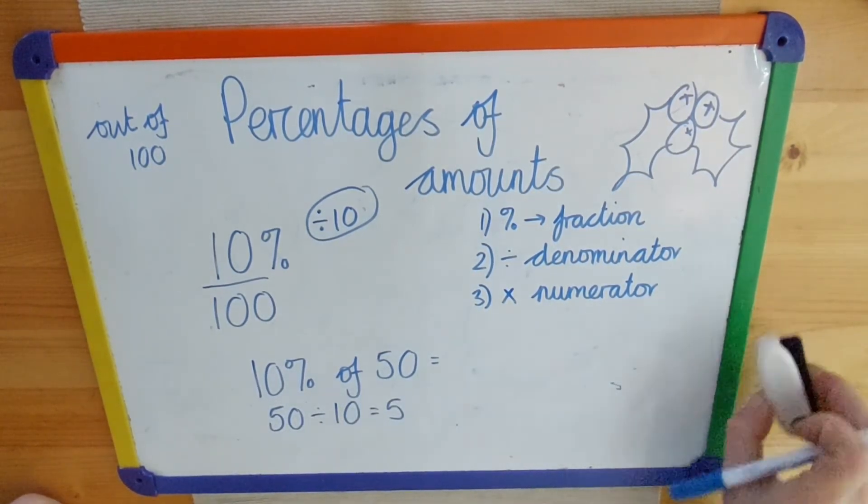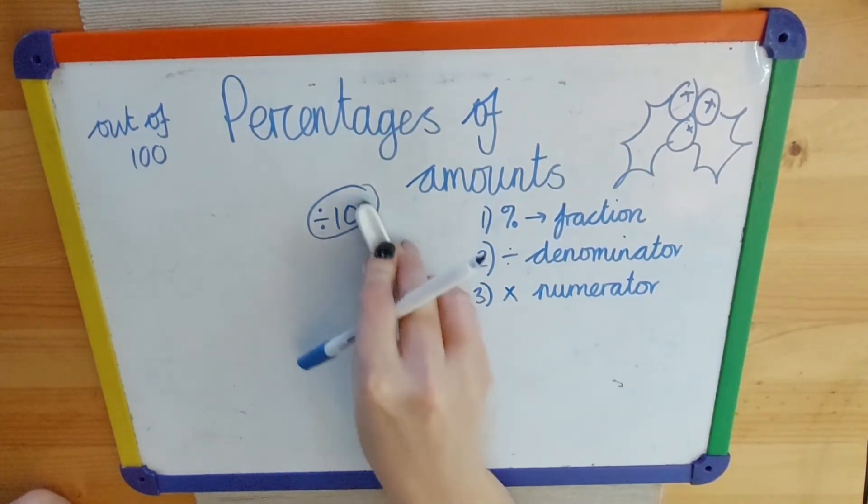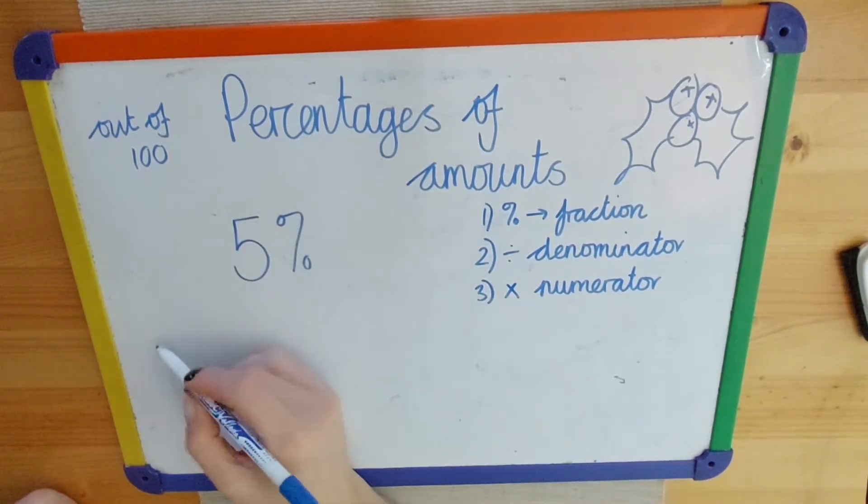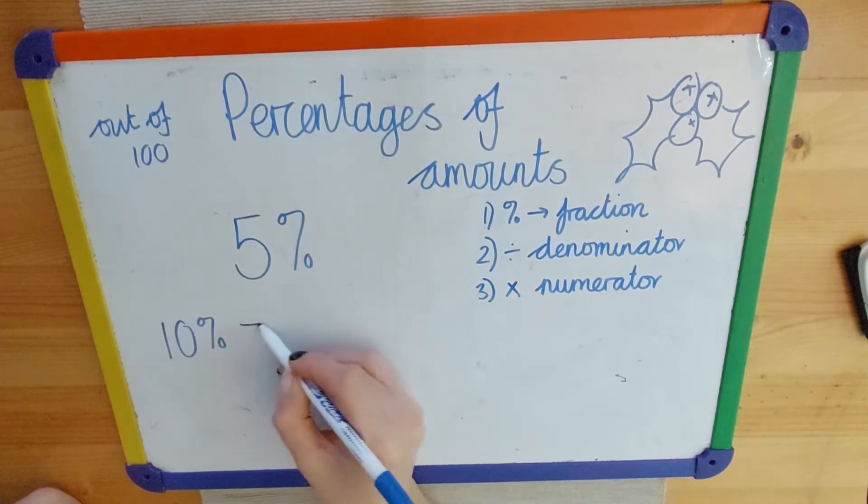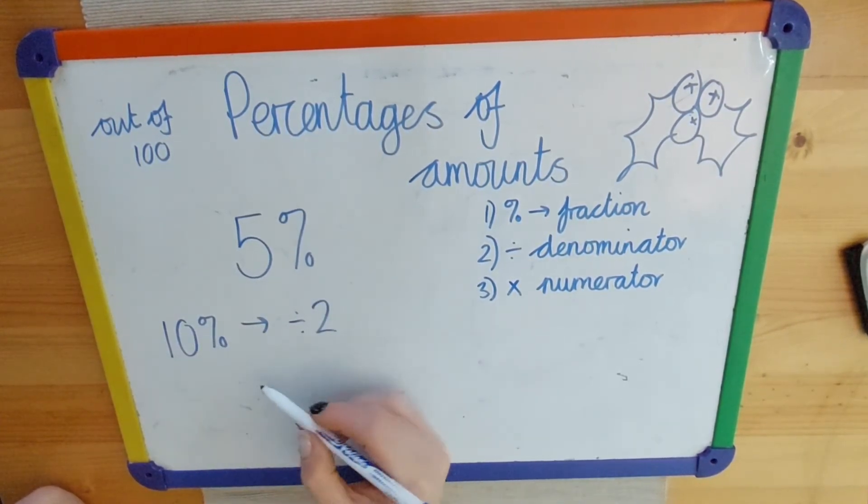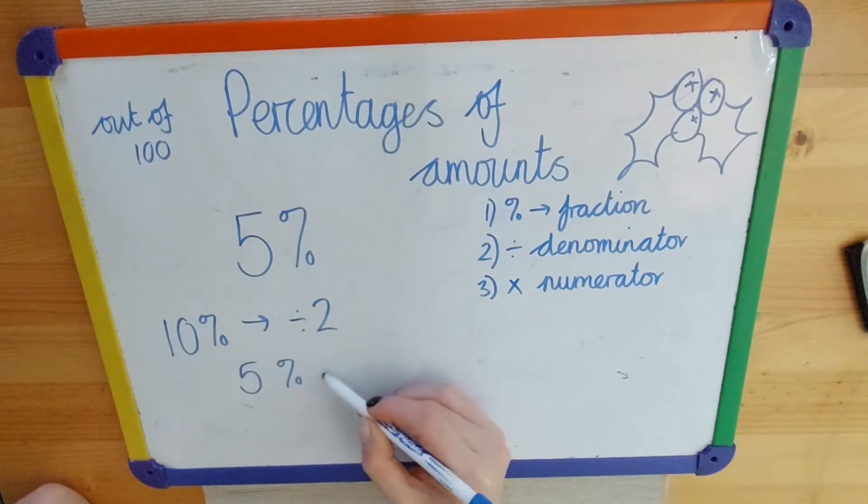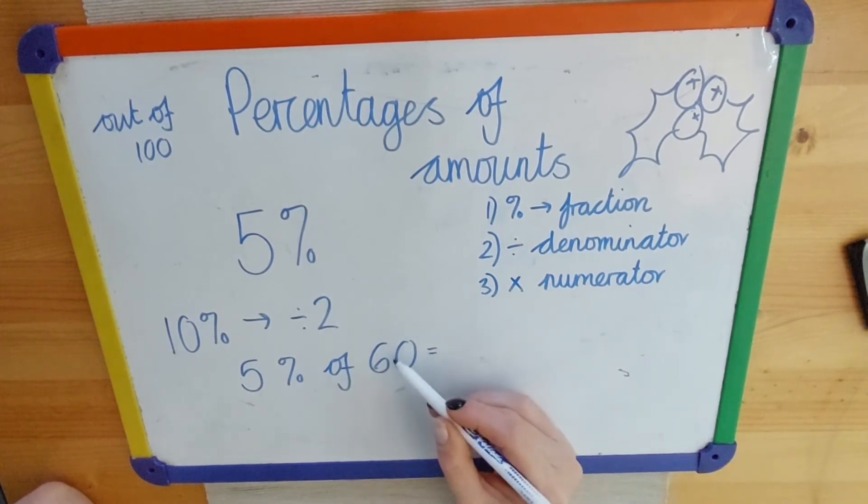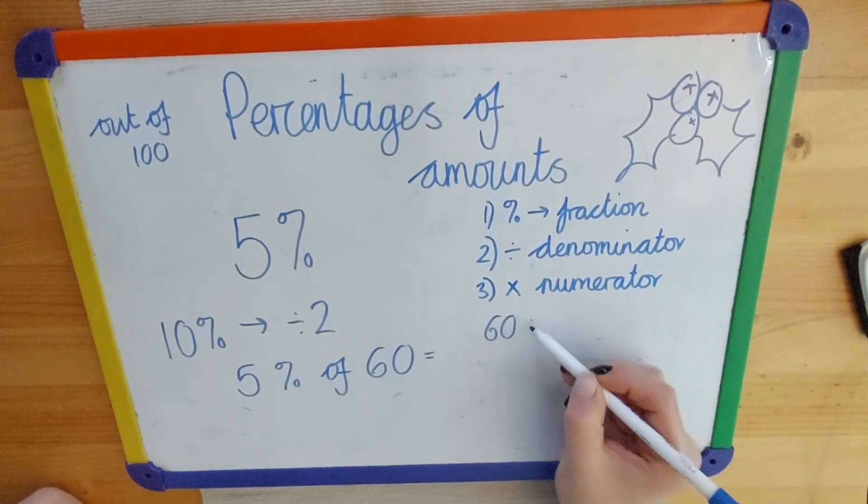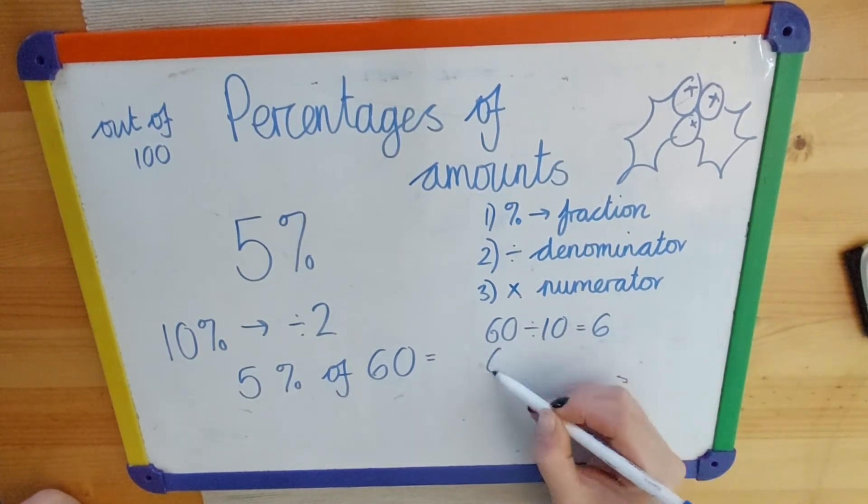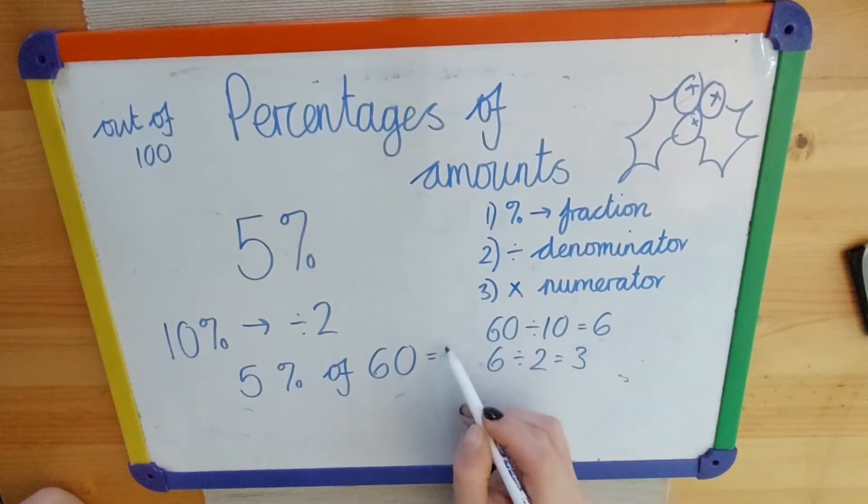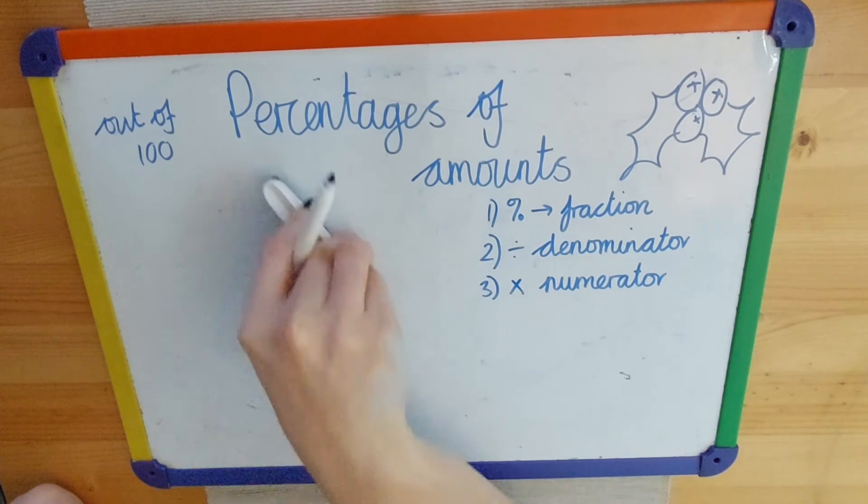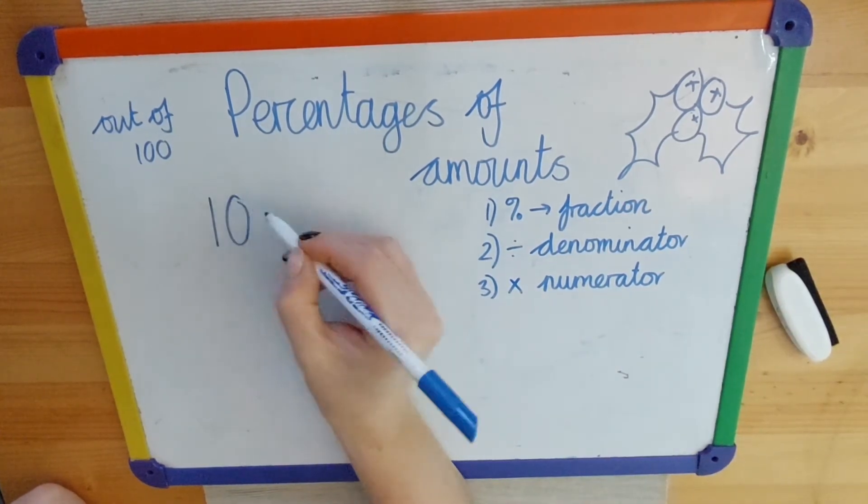If I wanted to find 5%, for example, what I could do is work out what 10% is and then divide that by 2. So say, for example, I wanted to find 5% of 60. What I would do is find what 10% is, so 60 divided by 10, which gives us 6, and then we could do 6 divided by 2, which gives us 3. So we know that 5% of 60 is 3.